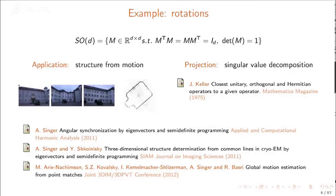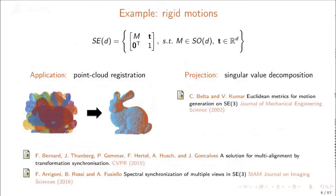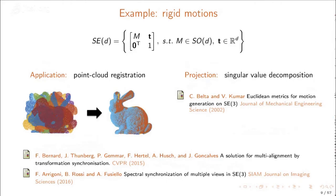Another example is rigid motions, which represent rotations followed by translations. The projection can also be done using singular value decomposition. This framework can be applied to point cloud registration, where the goal is to find the transformations that bring multiple point clouds into alignment.